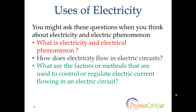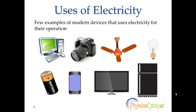This lesson, which I would cover in a few videos, is all about answering these questions. Modern devices which we use in our day-to-day life — for example, computer, camera, fan, electric bulb, battery, cell phone, television, refrigerator, etc. — all require electricity for their operation.